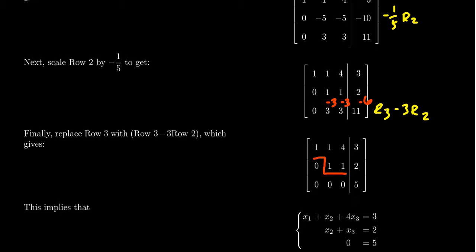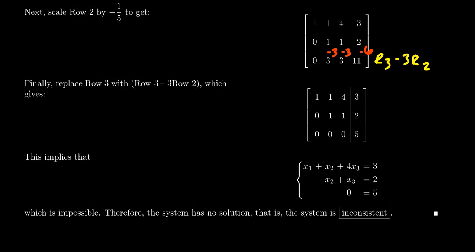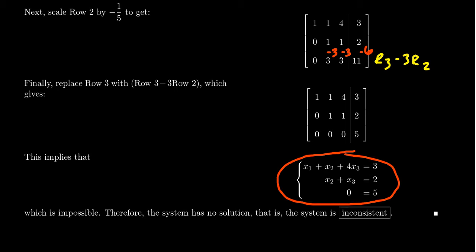This augmented matrix represents a system of equations. Converting it back to the associated linear system: the first equation is x1 + x2 + 4x3 = 3, the second is x2 + x3 = 2, and the third is 0 = 5. This system is equivalent to the one we started with — not equal, but equivalent — meaning it has the same solution set as the original system.